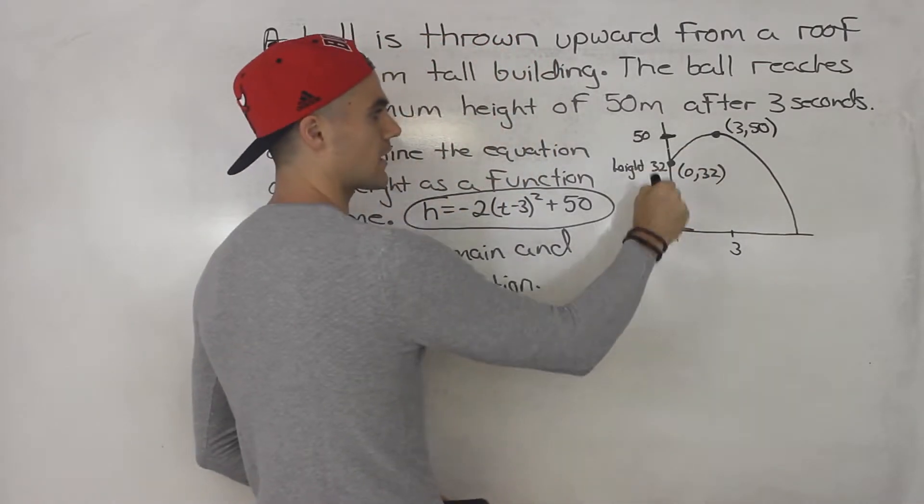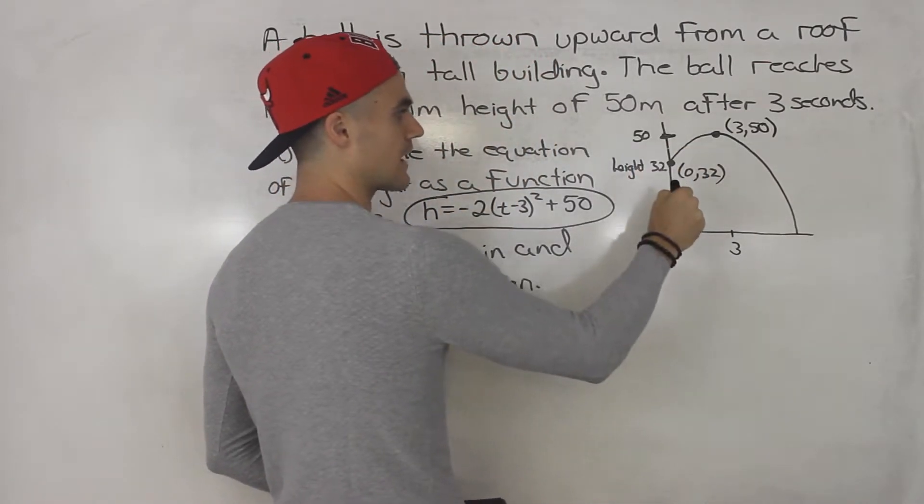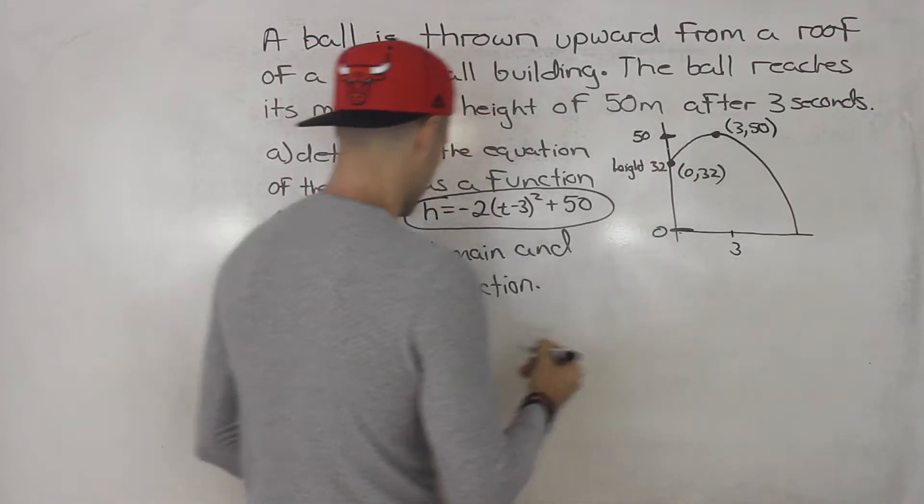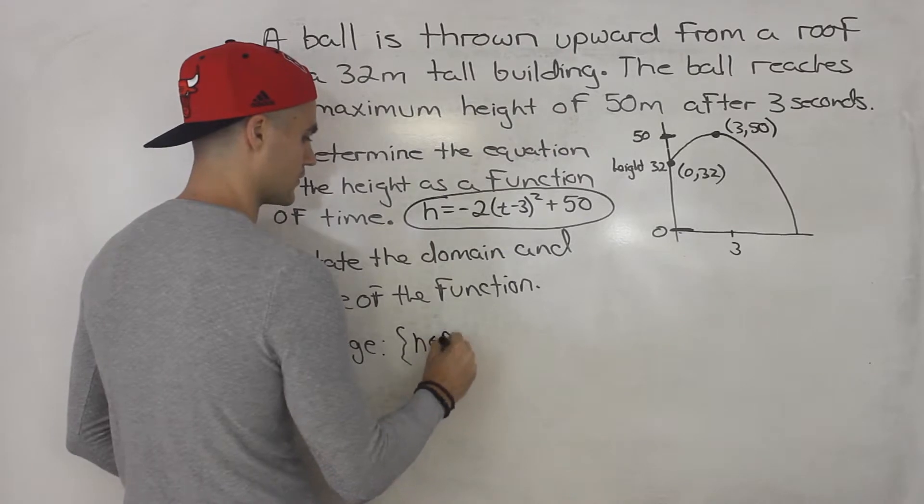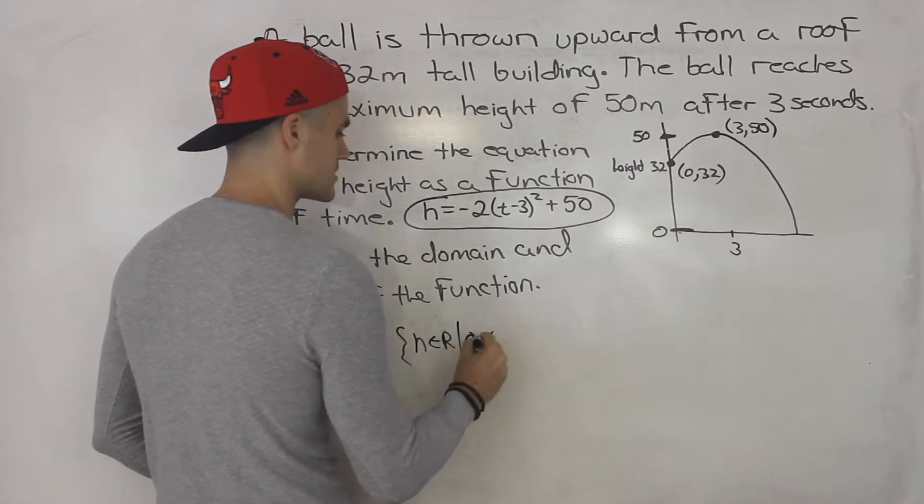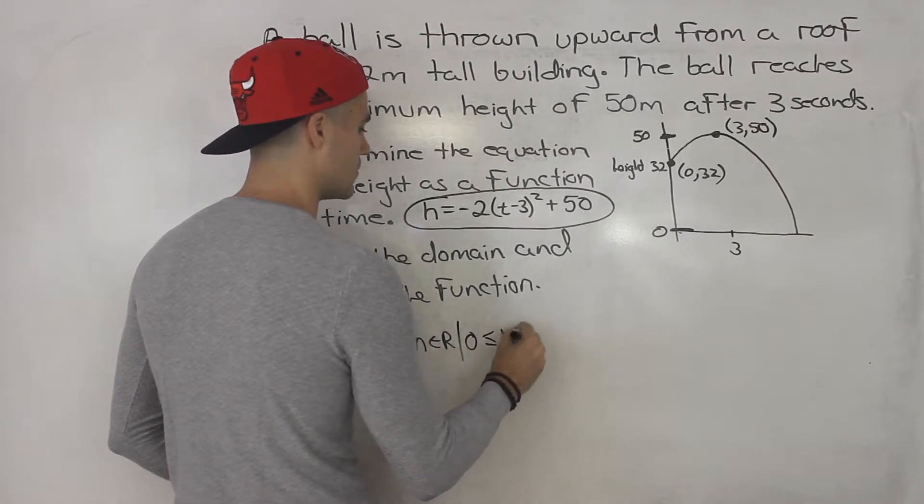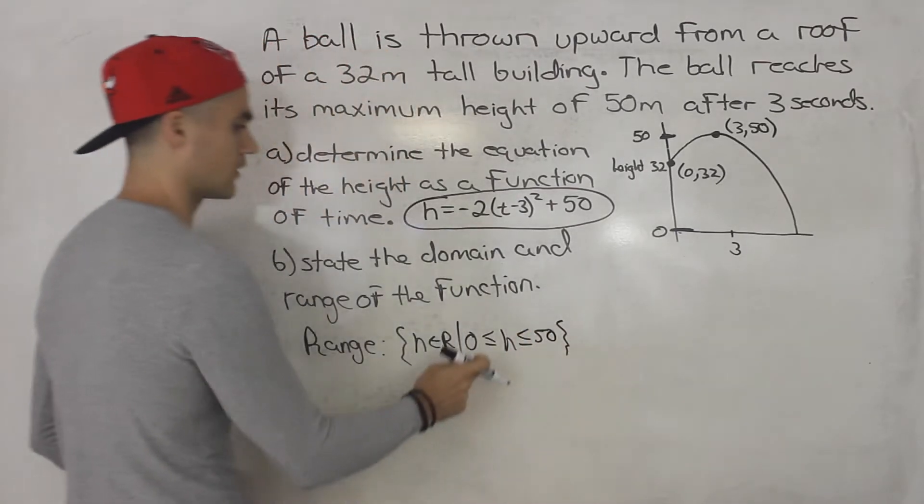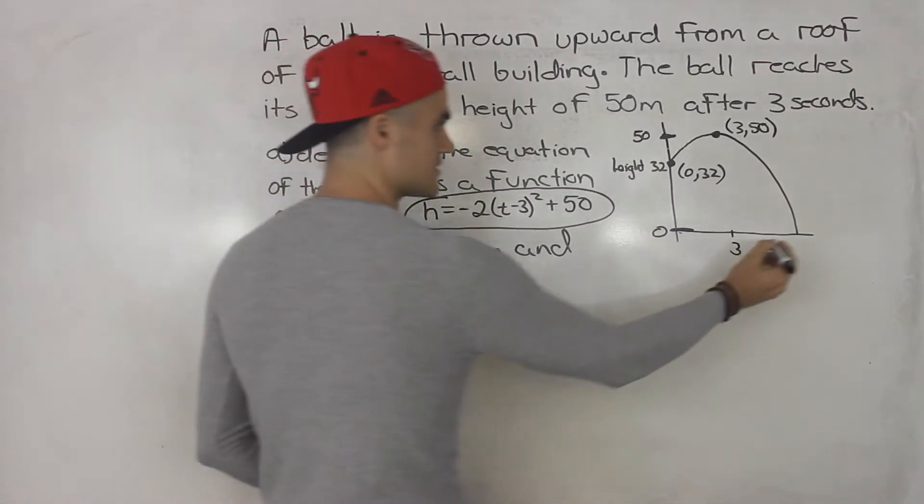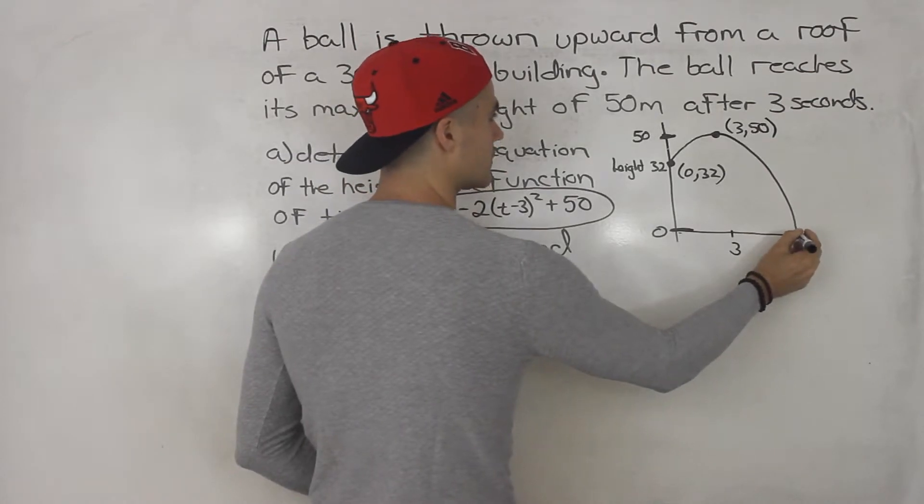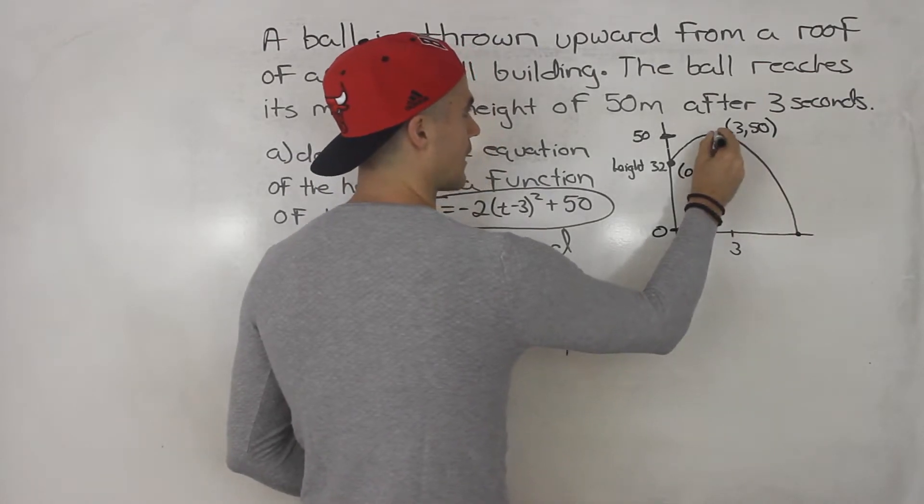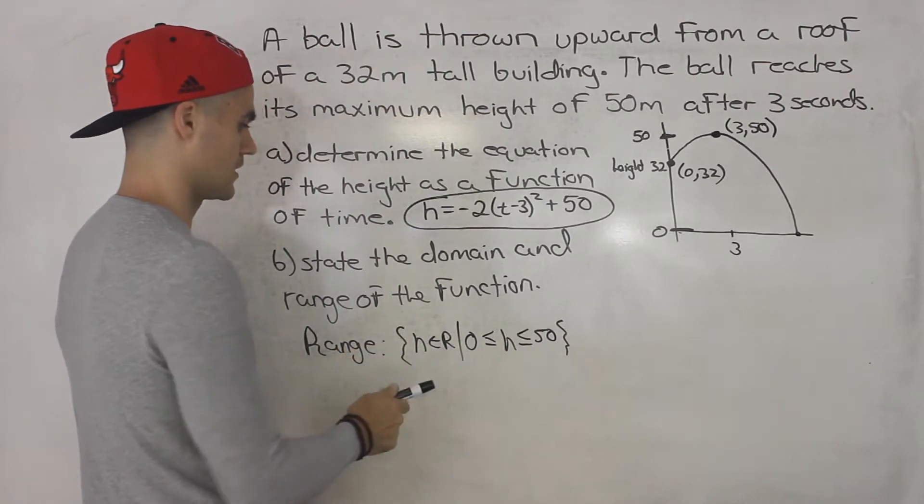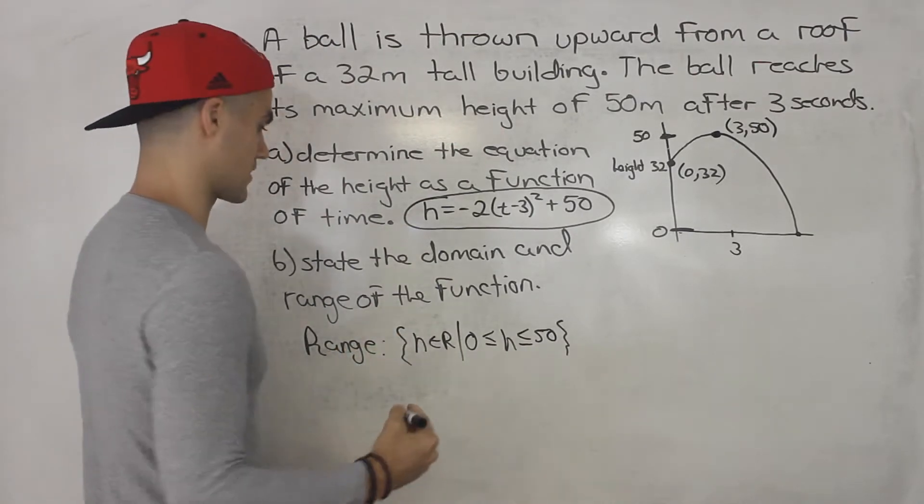it goes from 0 to 50. That is the range. So that's what the y value or the height is in between always. So basically, h is an element of real numbers. But h has to be between 0 and 50, inclusive of those. Because it could be 0 once it lands here, and it could be 50 at 3 seconds once it reaches that max height. So that there is the range.